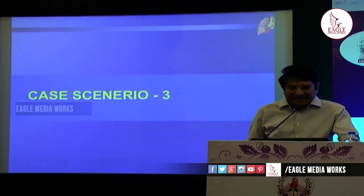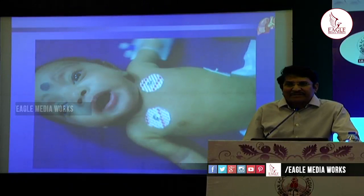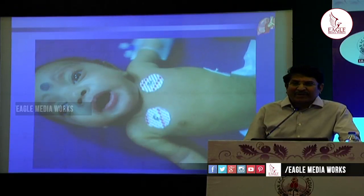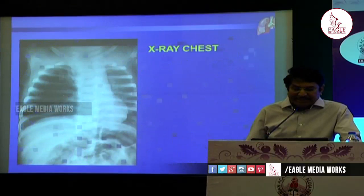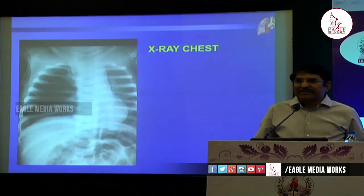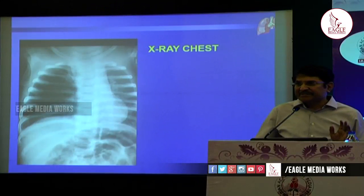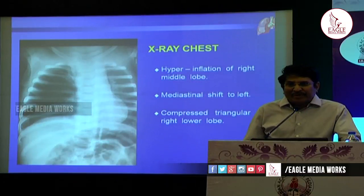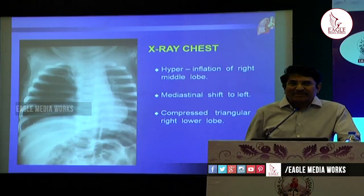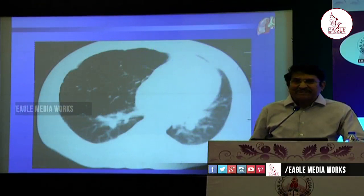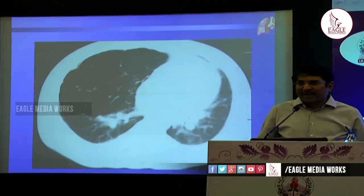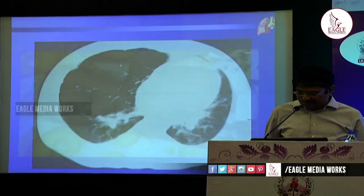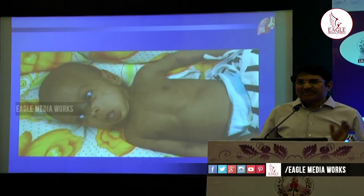Next case scenario: this is a three-month-old baby with distress since birth but gradually increasing — a progressive distress increasing day by day. The basic investigation for any distressed child is a chest X-ray. On chest X-ray, there is hyperinflation in the middle of the right hemithorax — in the right lung the middle lobe there is hyperinflation, with mild mediastinal shift and compressed right upper lobe and right lower lobe. The CT chest shows a hyperinflated middle lobe on the right side with herniation of the lung and mediastinal shift.